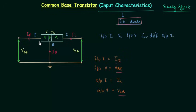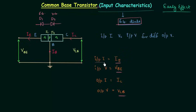We can consider a transistor as two diodes connected back to back. For NPN transistor, diode D1 and diode D2 are connected like this. In active mode of operation, diode D1 is forward biased and diode D2 is reverse biased. The input characteristics is between the input current IE and input voltage VBE, which is the current and voltage through and across diode D1. So we are simply plotting the forward biased characteristics of a diode.